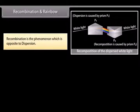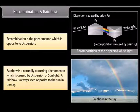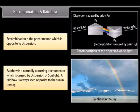Recombination and rainbow: Isaac Newton observed that if two glass prisms are placed parallel to each other with one inverted, white light entering one prism splits into seven colors, which when falling on the other prism recombine to give white light again — this is termed recombination. A rainbow is a natural phenomenon that occurs as a result of dispersion; it is always seen opposite to the sun in the sky. During rain, water drops act as prisms, refracting, dispersing, and internally reflecting sunlight to give the rainbow.